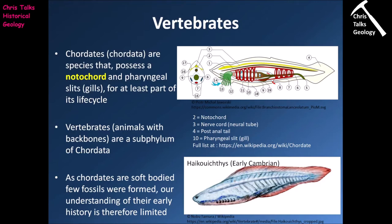Directly above the notochord we have the nerve cord, also called the neural tube, where nerves are located that transmit signals from the brain down the rest of the body. In human beings, the nerve cord eventually develops into our spinal column, whereas our notochord is reabsorbed by the body, typically gone by about age three or four. In terms of gill slits, when developing in embryonic form we do develop bone arches which would act as supports for gills; instead, our bodies use those gill arches to make bones for our inner ear, jaw, and voice box.